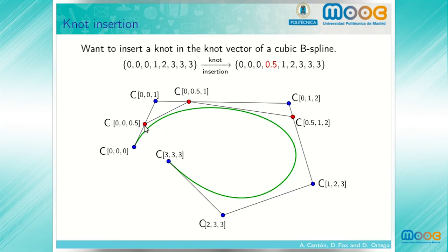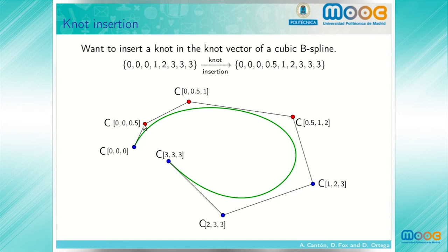These are the points in the DeVore algorithm, and the new control polygon is given by these points. The first control vertex is the polar form evaluated at 0, 0, 0. The second control vertex is the polar form evaluated at 0, 0, 0.5, the next three entries of the knot vector. The third control vertex is the polar form evaluated at 0, 0.5, 1, the next three entries of the knot vector, and so on.